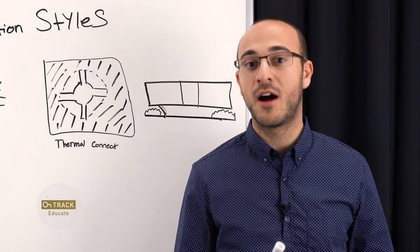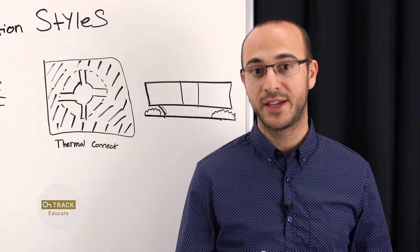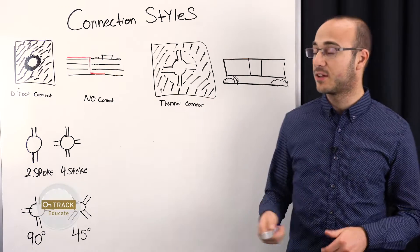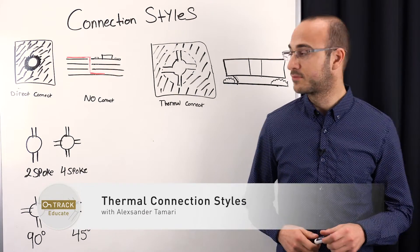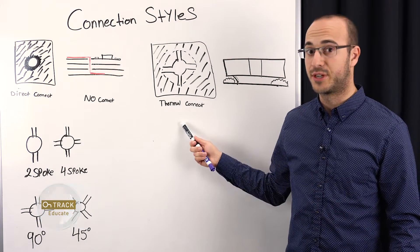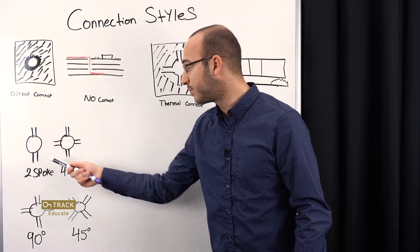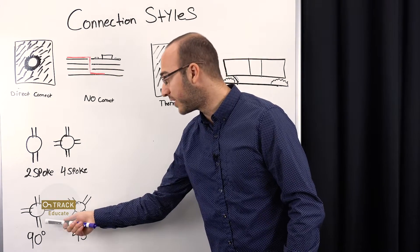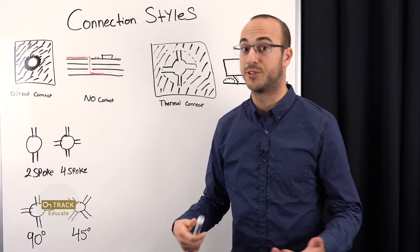Hello and welcome to this episode of the OnTrack whiteboard series. Today we're going to be talking about the different connection styles you can find on your PCB. We're going to talk about direct connect, no connect, and mainly thermal connect. We're going to talk about why we have two spokes versus four spokes and why we have 90 degrees versus 45 degree angled spokes.